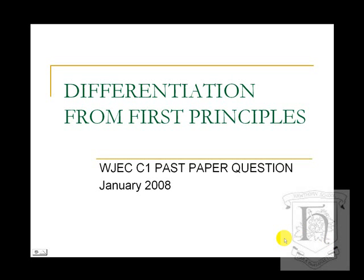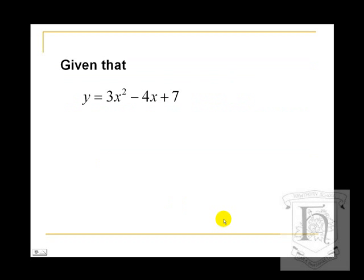In this video we are going to see a worked example of differentiation from first principles. This particular question is taken from the WJEC C1 January 2008 examination, but it is very similar to many other questions set by the WJEC and other exam boards in a C1 exam. The question is: given that y equals 3x squared minus 4x plus 7, find dy/dx from first principles.